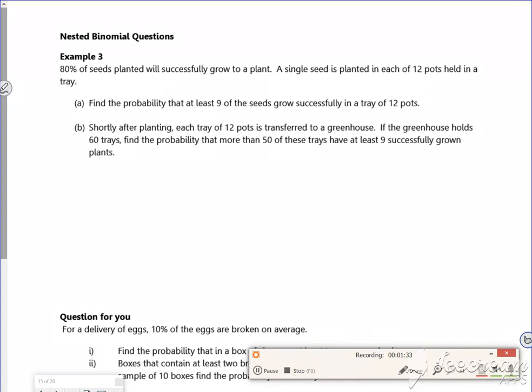It says 80% of seeds planted will successfully germinate. We've got 12 pots held in a tray. So let X equal the number of successfully growing seeds in a pot. The pot bit's important, if you can read my writing.